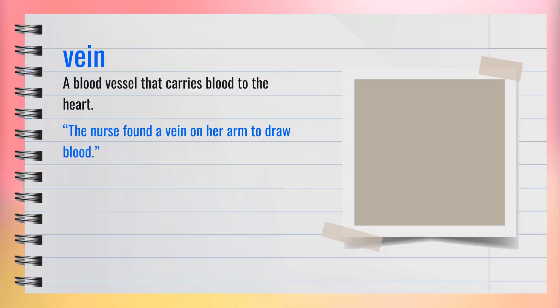The word vein is a noun, spelled V-E-I-N. Synonyms include blood vessel. For example, the nurse found a vein on her arm to draw blood. In summary, a vein is a blood vessel that carries blood to the heart.